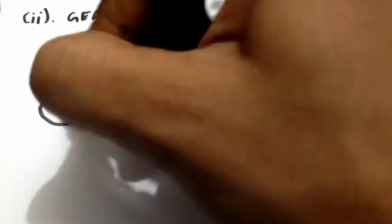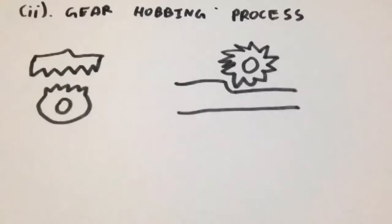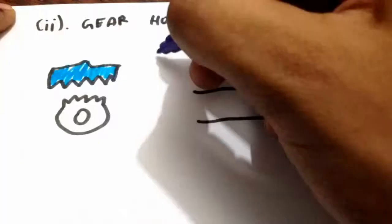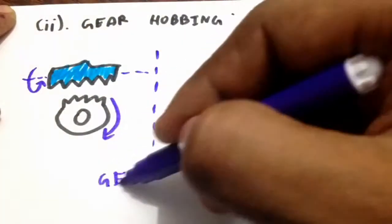Second, Hobbing Process. The cutter used in this process is called Hob, which is a worm-like structure that carries a profile parallel to its axis. The hob is rotated at a suitable speed and fed into the gear blank.